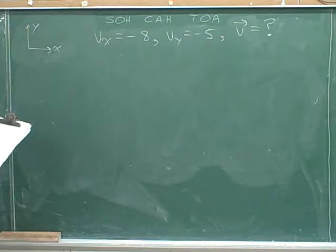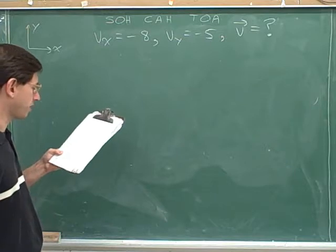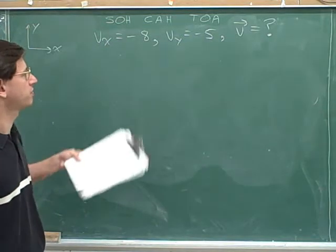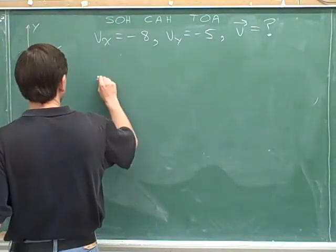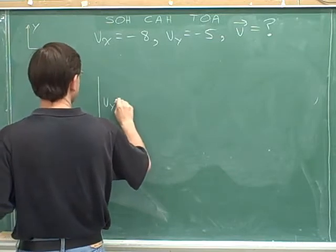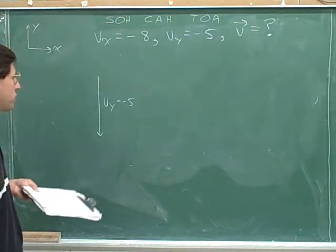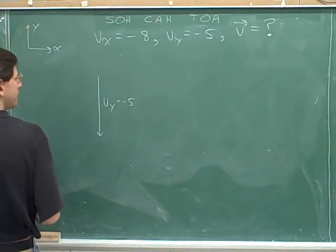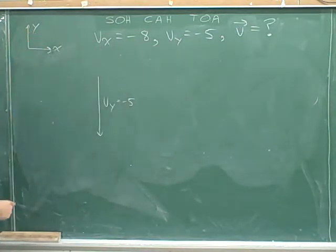Now I'm going to write the components. I could start by writing the x component or the y component, but on this problem I'm going to draw the y component first. V sub y is negative 5. Notice that this is pointing down because it's negative and the positive direction is up.